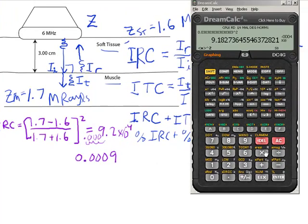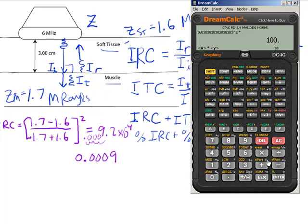Written as a decimal that's 0.0009. If I want to express that as a percentage, I multiply by 100, and that comes out to only 0.09% would be reflected.